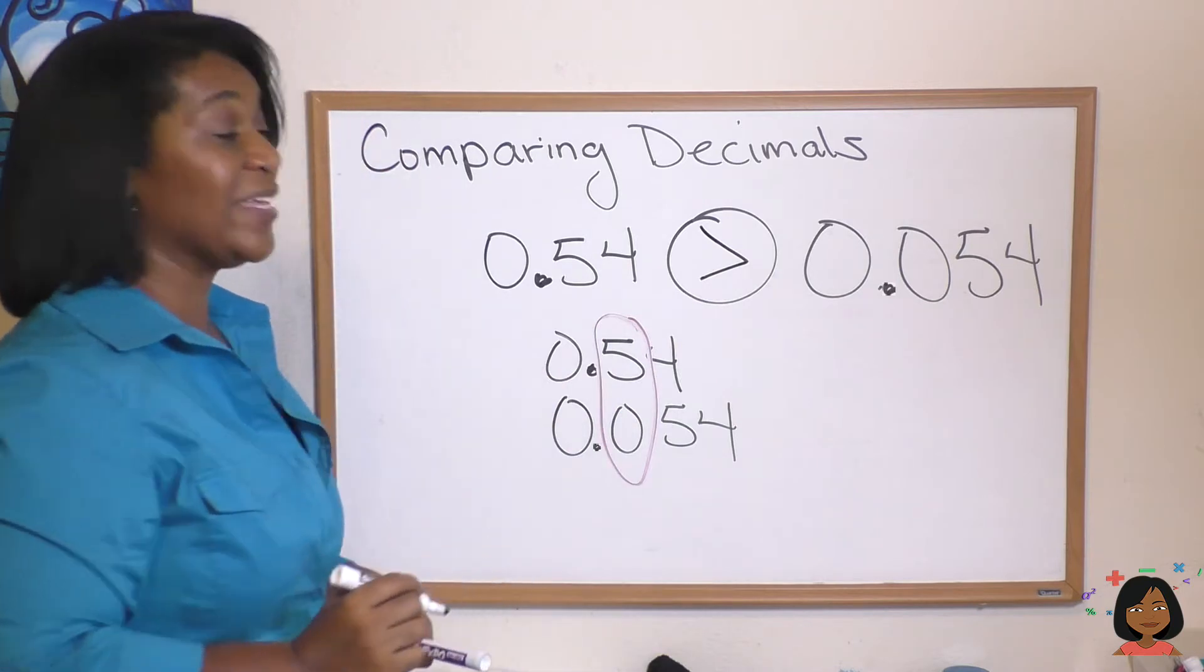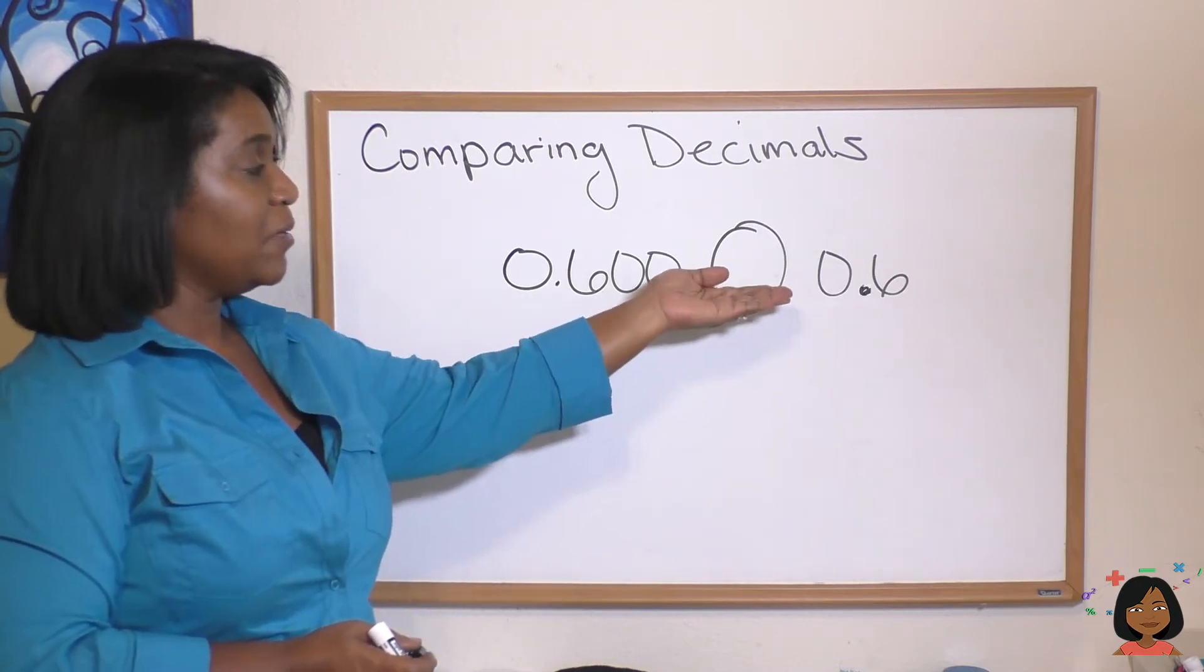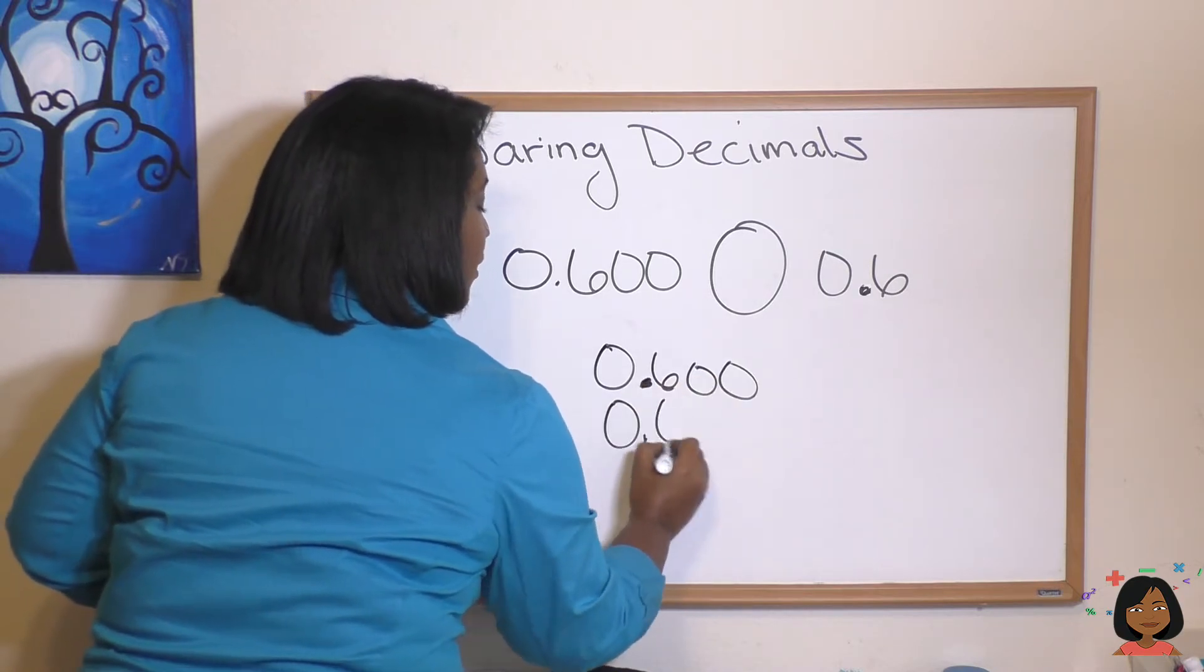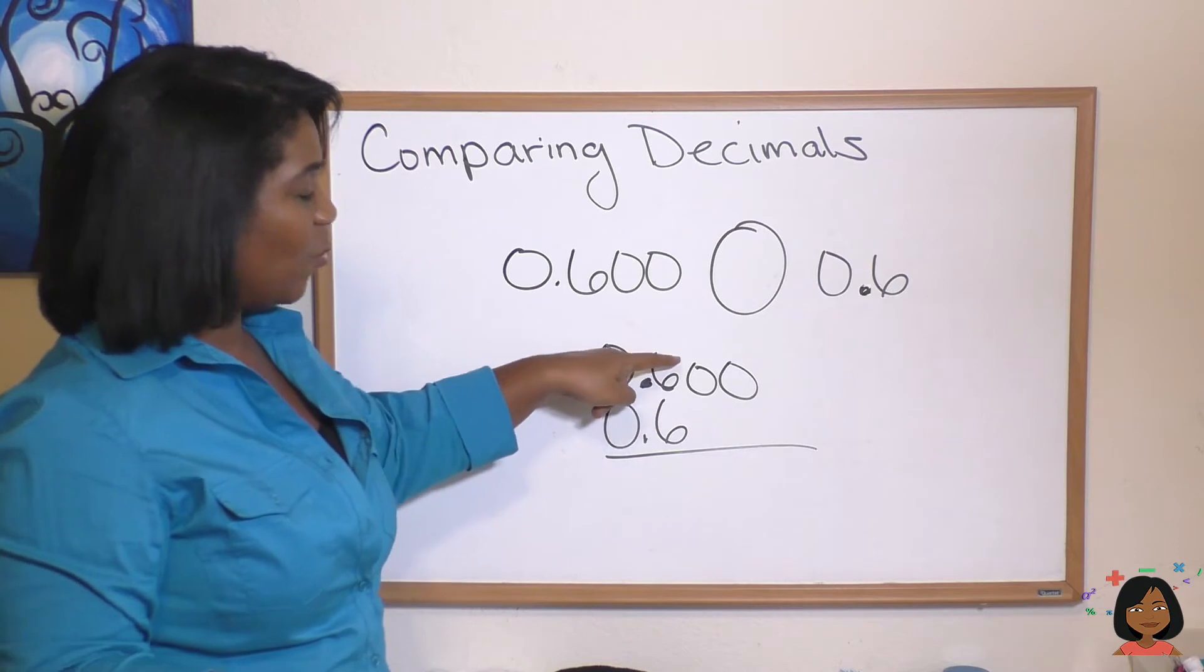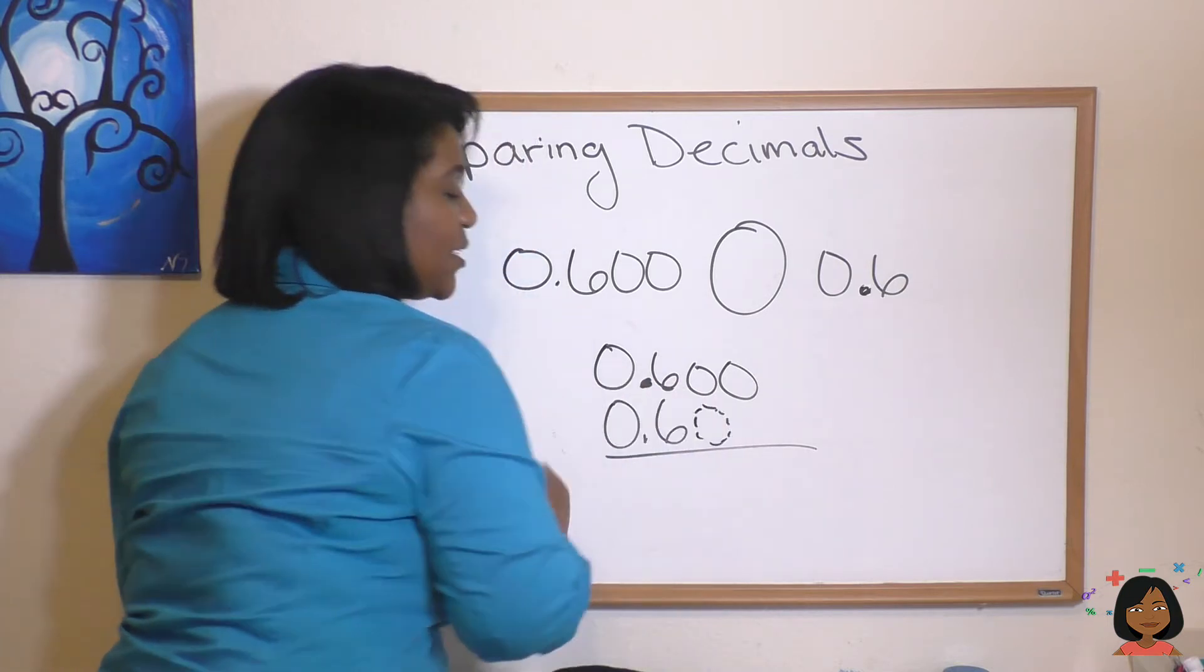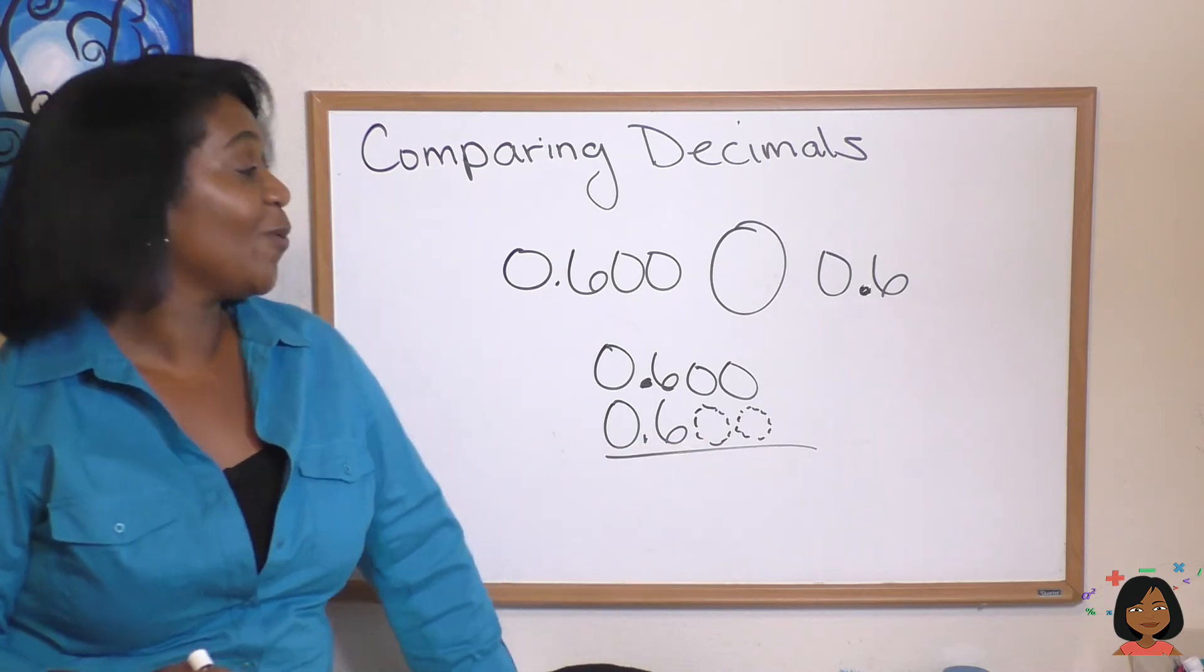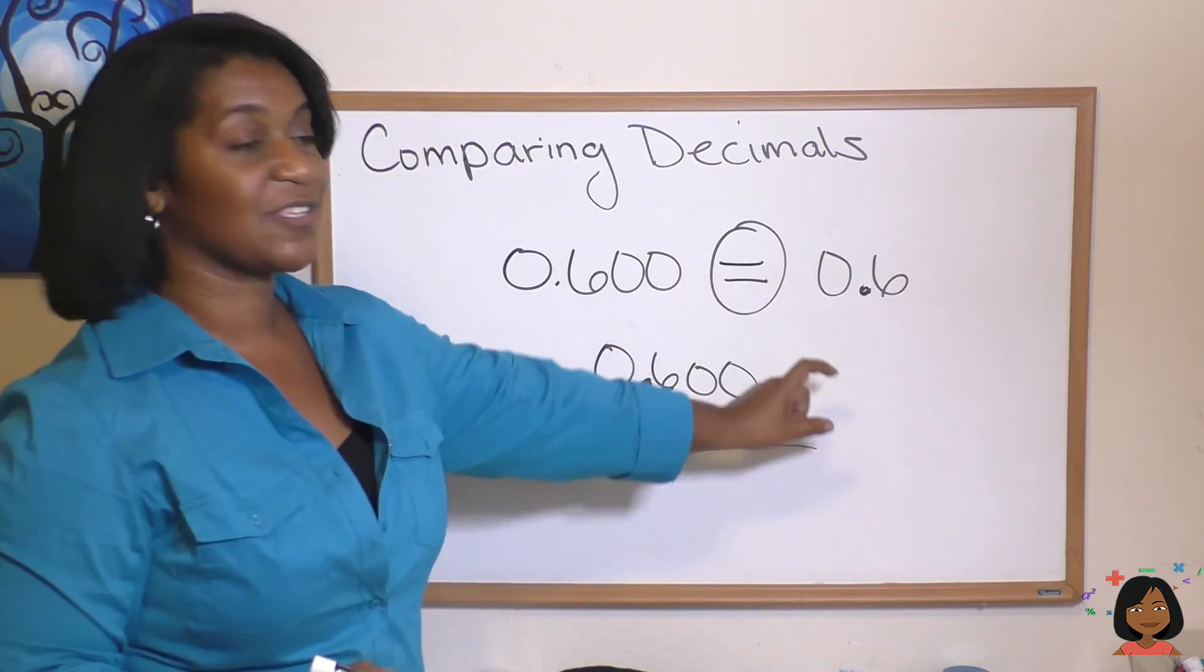What about this decimal: 0.600 and 0.6? Let's line them up and take a look: 0.600 and 0.6. We can see that when we first look at the tenths place, six equals six. Let's move out. We have a zero here, but don't we also have a zero here even though it's not written? We could actually add as many zeros as we want and it would still be the same. So when we compare these two decimals, we know that our answer will be equal. Doesn't matter how many zeros go past the place values; they're equal.